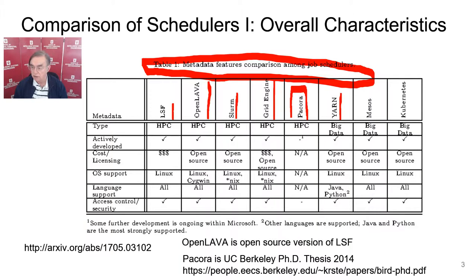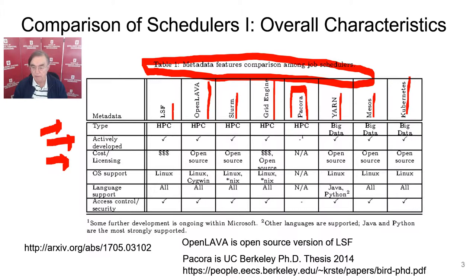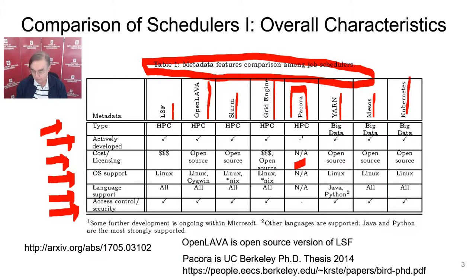Now we have Big Data schedulers: Yarn, Mesos, and Kubernetes. All but Pecora are actively being developed. Some cost real money like LSF, others are possibly free. Some really aren't developed enough to be useful, like Pecora. They have different operating systems they support — most support Linux — and various languages, mainly either all languages, or Yarn which is aimed at Java and Python. There are some comments about the importance of whether they support robust access control and security.